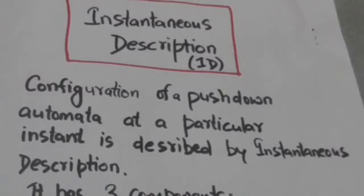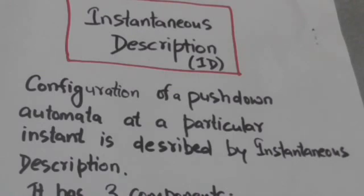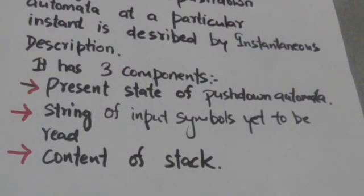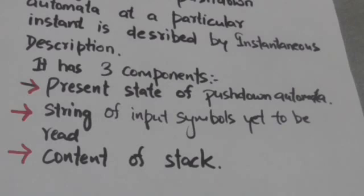In this tutorial we will study about the instantaneous description of a pushdown automata. The configuration of a pushdown automata at a particular instant is described by its instantaneous description. It has three components: first, the current state of the pushdown automata; second, the string of input symbols yet to be read; and third, the content of the stack.